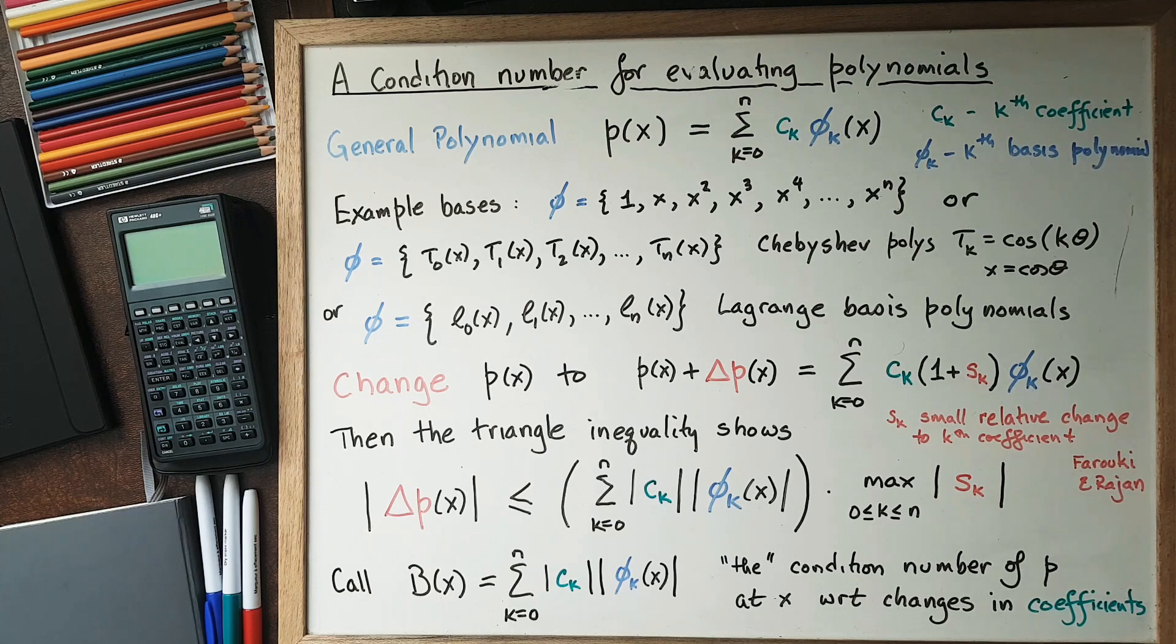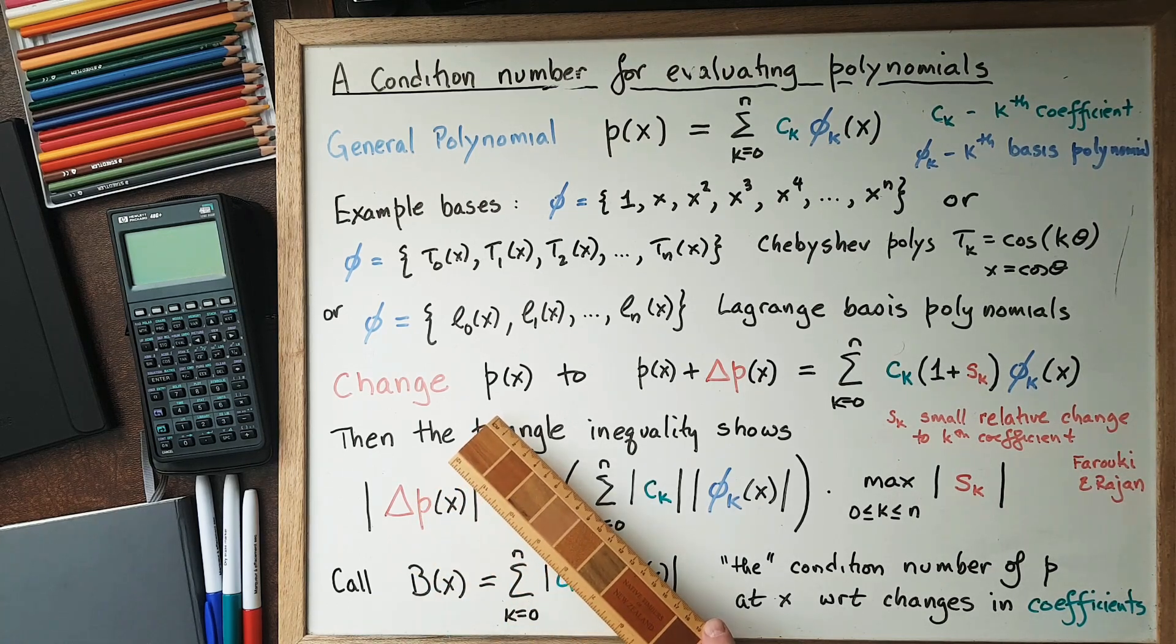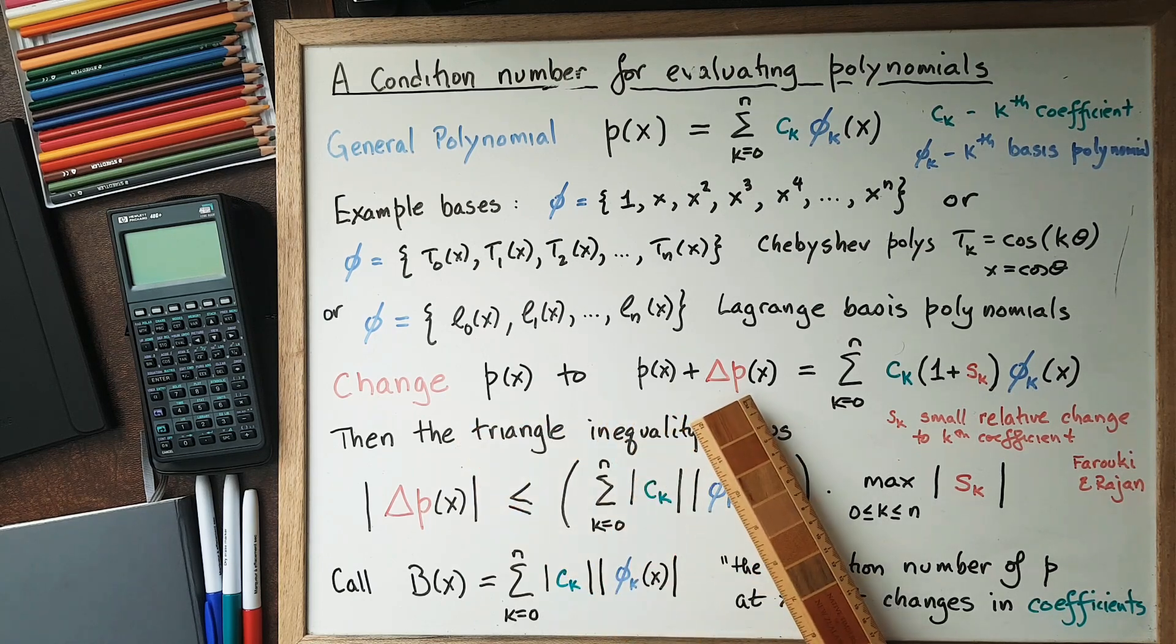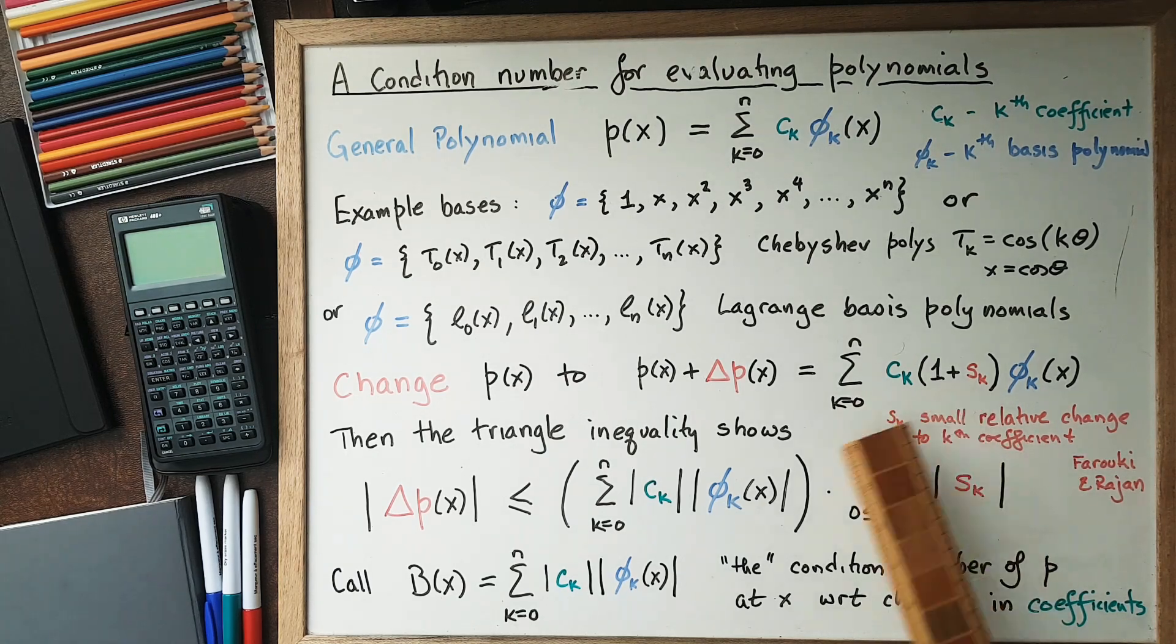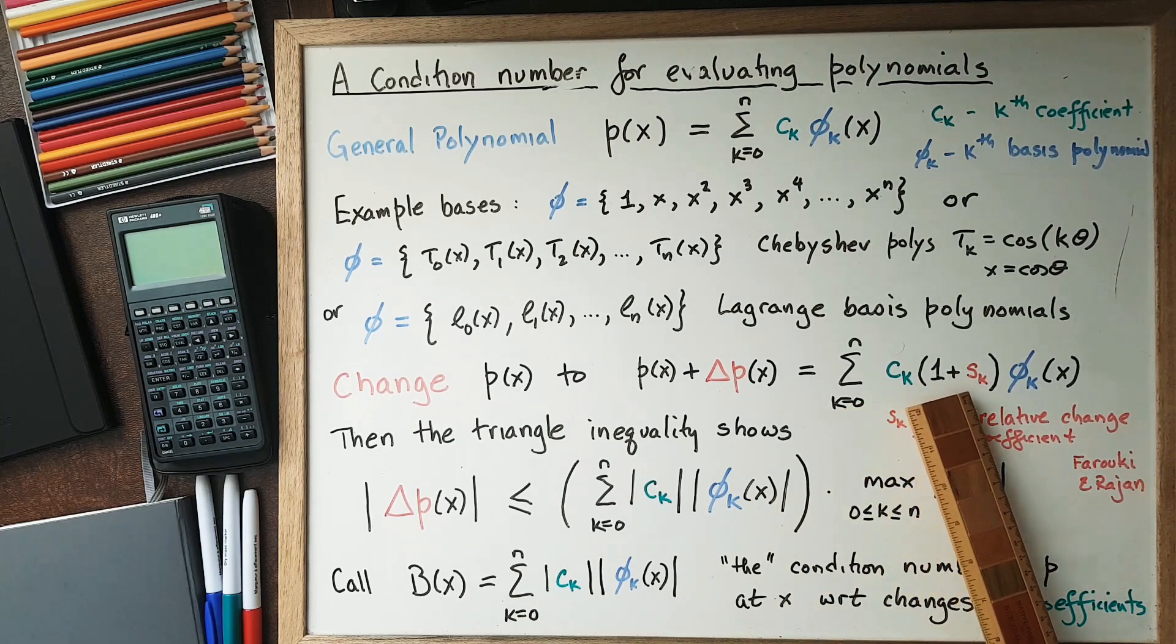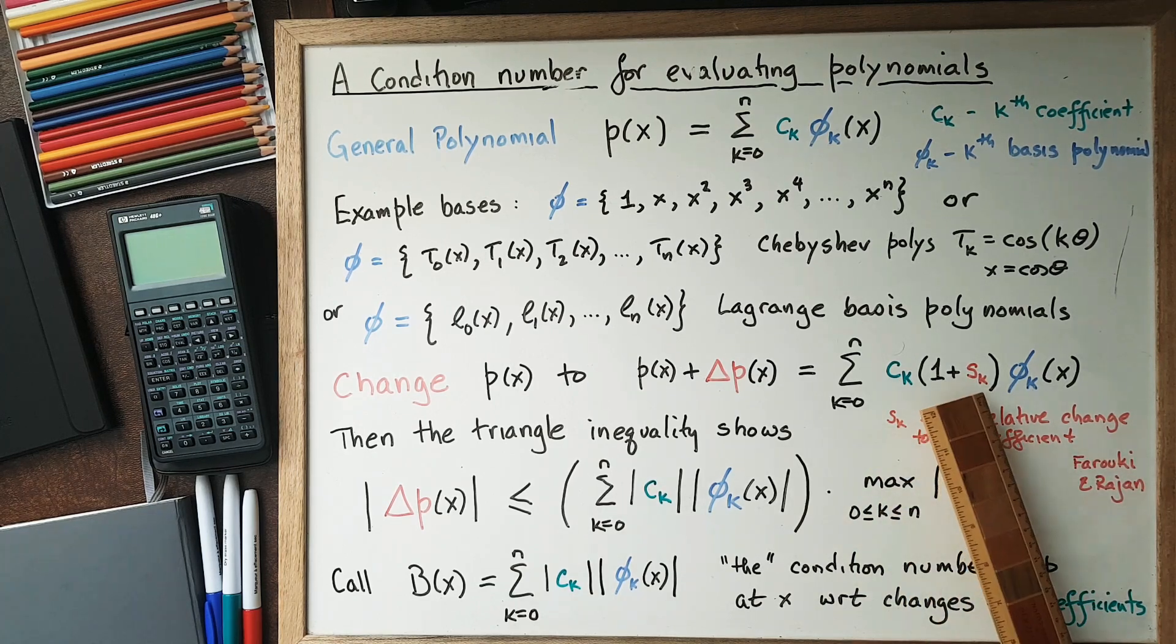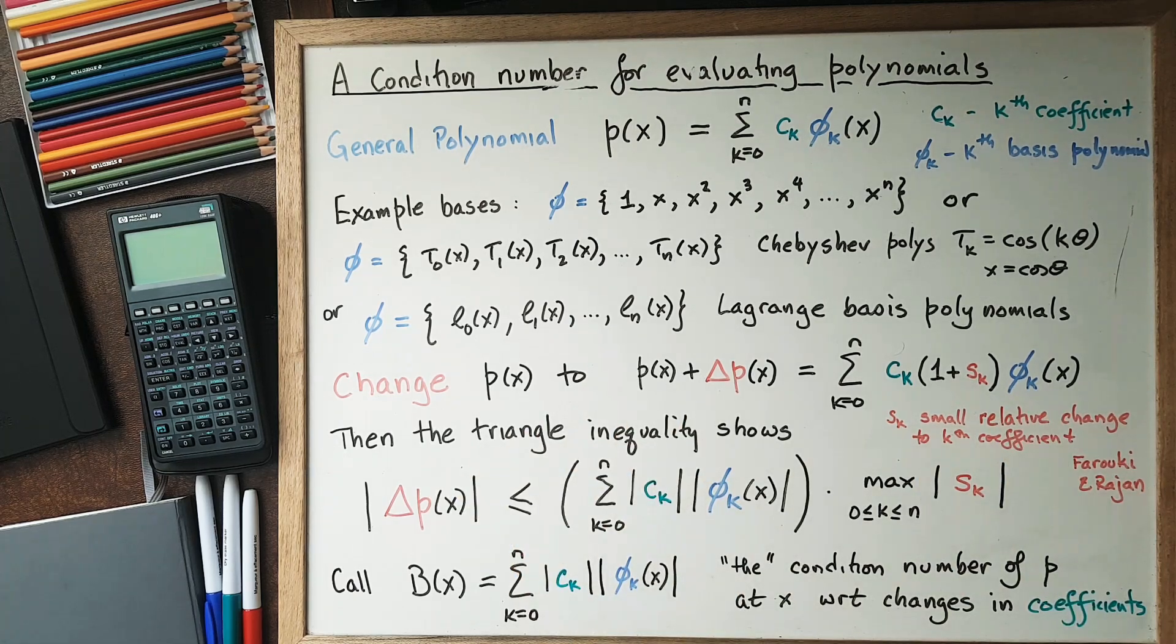The theory of understanding the sensitivity of these polynomials to changes can be examined most easily in the following way. If we change p(x) to p(x) + Δp(x), where the change occurs by changing each coefficient by a small relative amount, so c_k gets replaced by c_k times (1 + s_k), where s_k is a small relative change to the kth coefficient. You can think of that as a percentage change. This theory was articulated first in the way that I really liked by Farouk and Rajan about 1988.